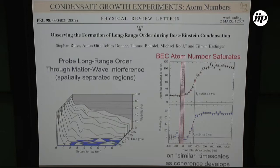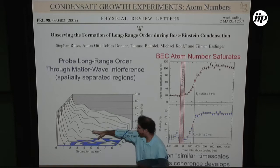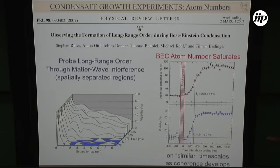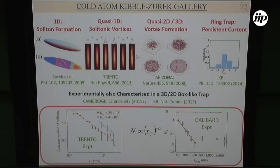People started looking at the growth of coherence dynamically. An experiment showed the growth of the phase correlation function in time, not as you approach the critical region. What was found is that coherence grows on a similar time scale to atom number growth. The question was whether the system grows coherently all along. Then came a new generation of experiments that deliberately broke symmetry by quenching very fast through the phase transition.